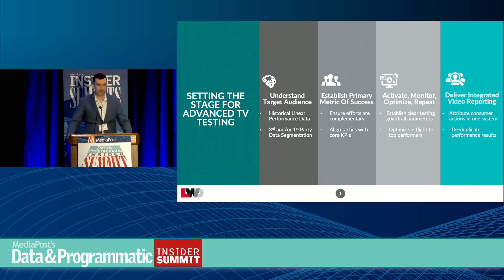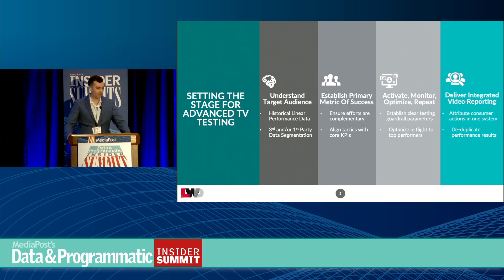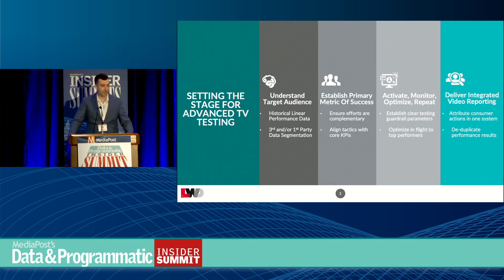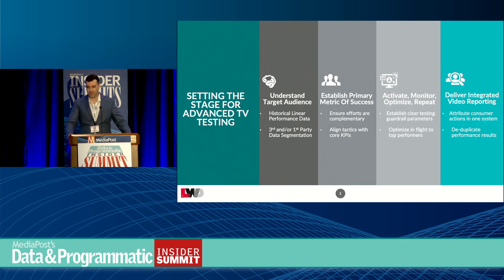Finally, we've got to align on the core KPIs. We've got to make sure that what we're buying and what we're optimizing towards is something they're looking to get from this test, whether that's a cost-per-sale metric or a conversion metric — getting alignment ahead of time and making sure we're on the same page before we really dive into that testing. We're very nimble in terms of our schedules, looking at different partners that are working and giving our clients insights on a weekly basis.